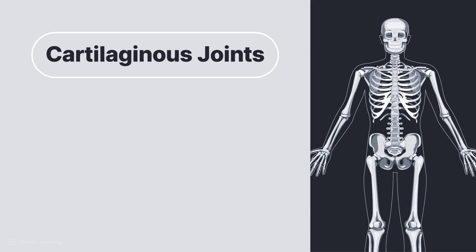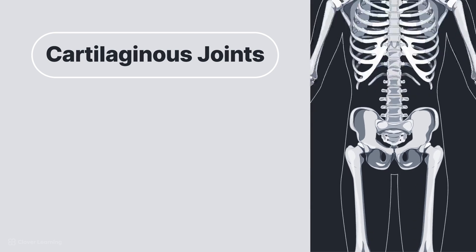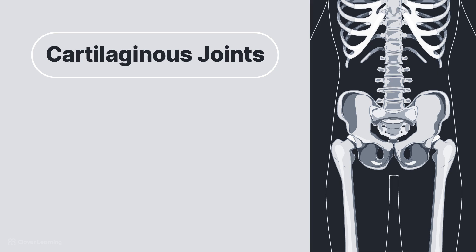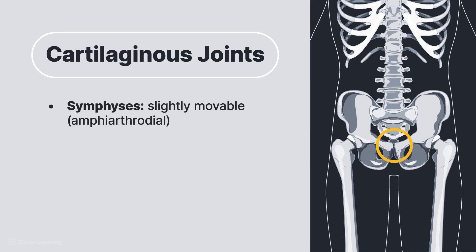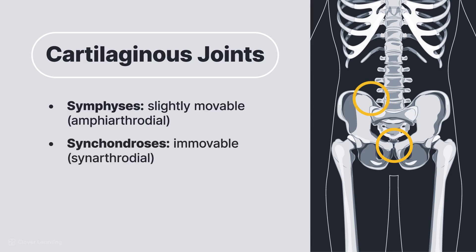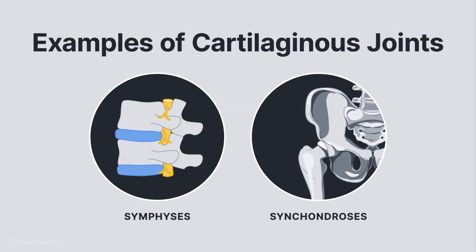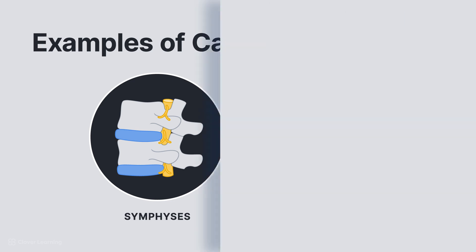Cartilaginous joints also lack a joint cavity, are virtually immovable, and the articulating bones are held together tightly by hyaline or fibrocartilage. There are two types of cartilaginous joints: symphases, which are slightly movable or amphiarthrodial, and synchondroses, which are immovable or synarthrodial. Examples of symphases include intervertebral joint spaces, the joint between the manubrium and body of the sternum, and the symphysis pubis. Examples of synchondroses include epiphyseal plates and the acetabulum of the pelvis.